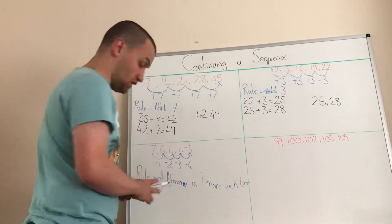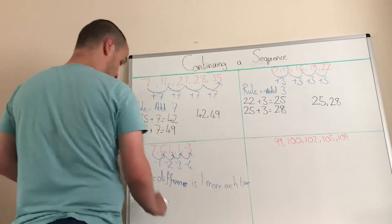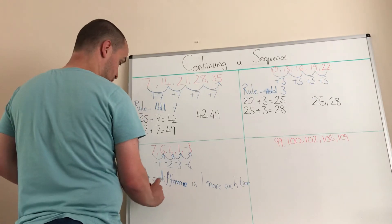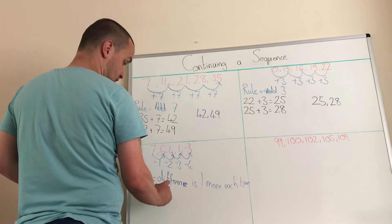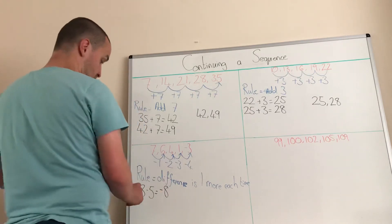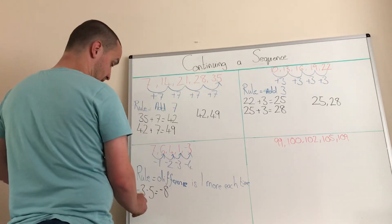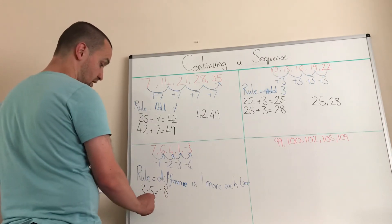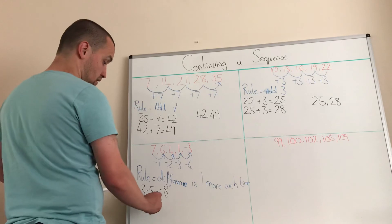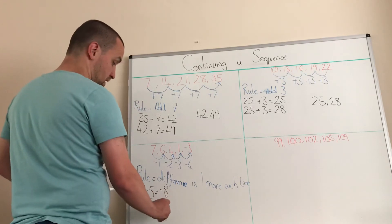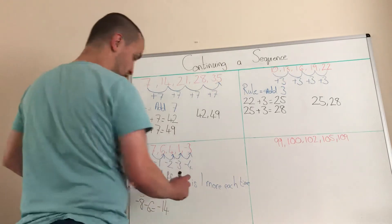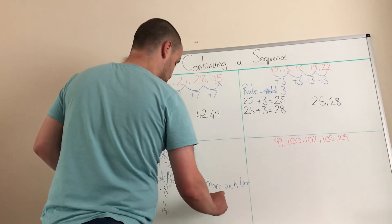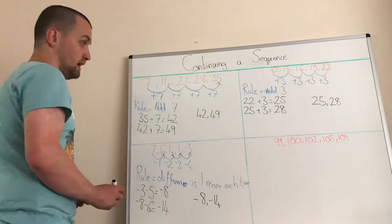So to find the next one, we get a minus five. So you're going to do minus three, minus five, which is minus eight. And then we're going to do minus eight. Now the last difference was minus five. So this difference is going to be minus six. So minus eight, minus six is minus 14. So our next two terms are minus eight, minus 14.